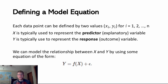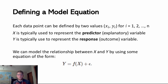Every data point can be identified on the scatterplot based on these two values. The index i represents one up to n data points, so each point has a specific label or coordinate. I can model the relationship between x and y using some kind of equation: if y is my response variable, then y is going to be some function of x, and given some value of x I can make a prediction for what y might be.